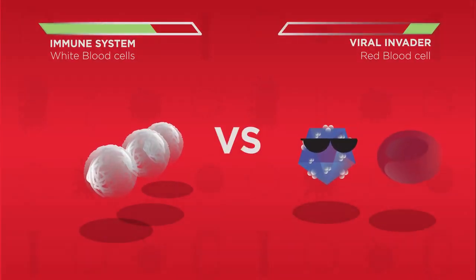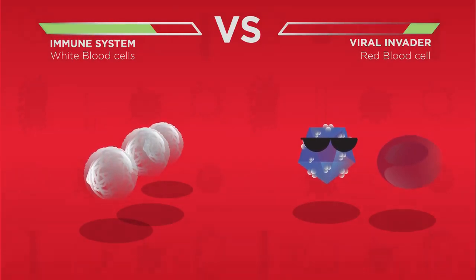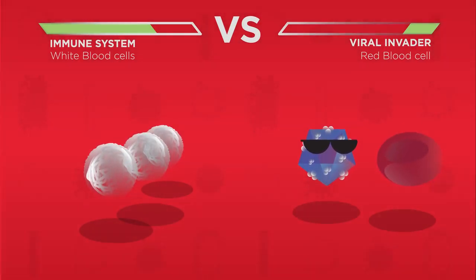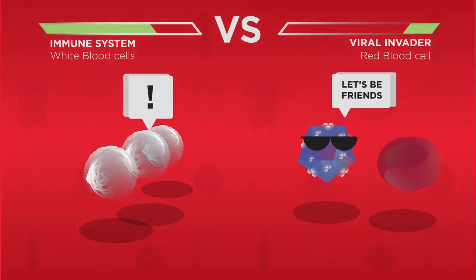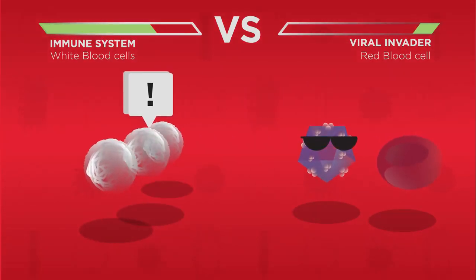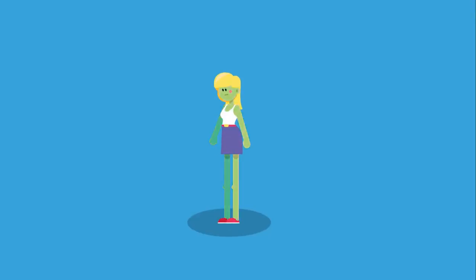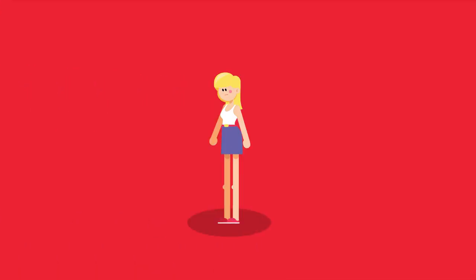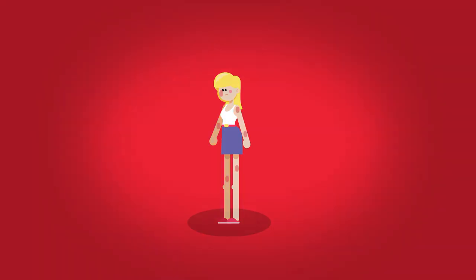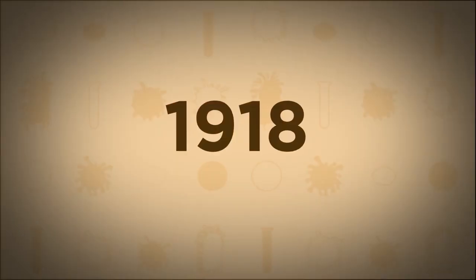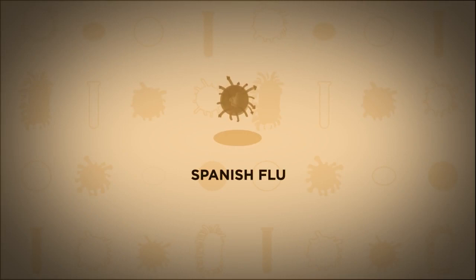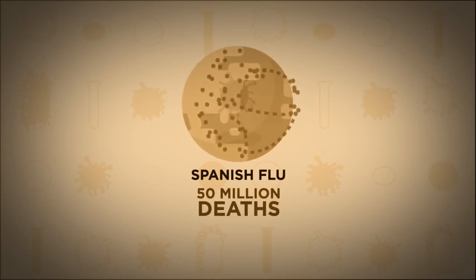Fortunately, the human immune system is very good at dealing with viral invaders. Sometimes our immune system will recognize the virus as an intruder and will destroy the virus before it gains entry into a cell. Even after infection begins, our immune system can destroy the virus and the person recovers. Sometimes the immune system cannot destroy the virus fast enough, and the virus can cause permanent damage or death. In 1918, the Spanish flu is thought to have caused up to 50 million deaths worldwide.